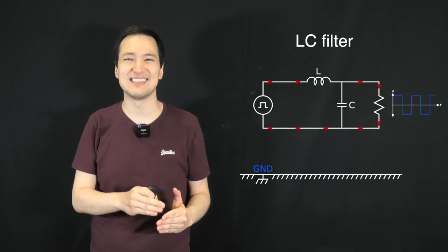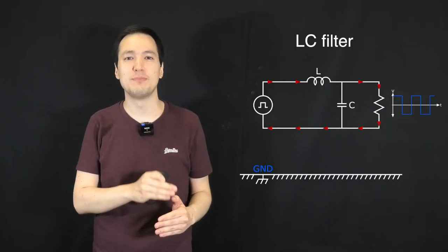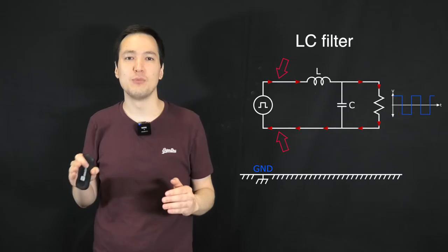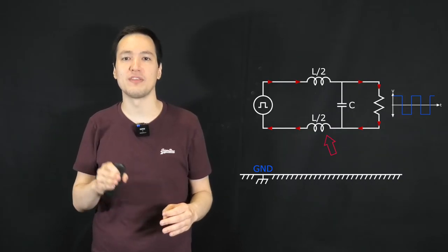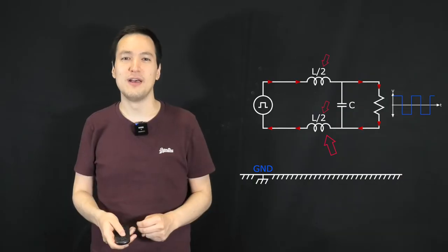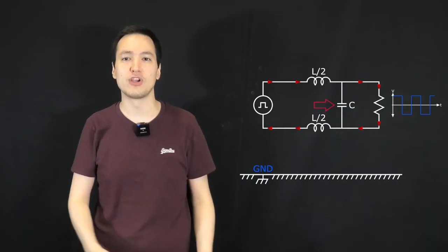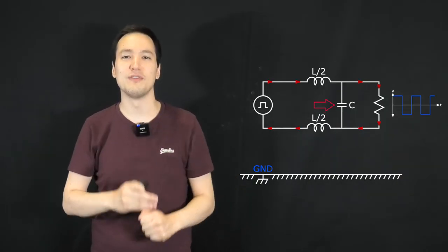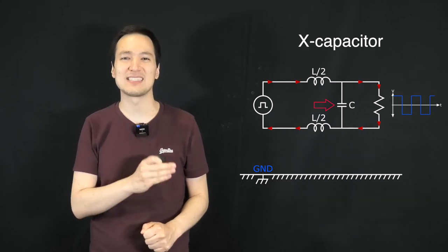For this, we can use a simple LC filter. Since we want to keep both lines in balance, we use an inductor in the return path as well and divide the initial value by 2. Because we connect the capacitor across both lines, we call this filtering element X capacitor.